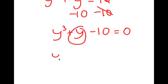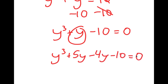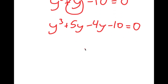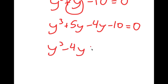Now y, I can write this as 5y minus 4y. From here, I can factor by grouping. I'm going to switch the order of 5y and 4y, so I now have y to the power of 3 minus 4y plus 5y minus 10 is equal to 0.